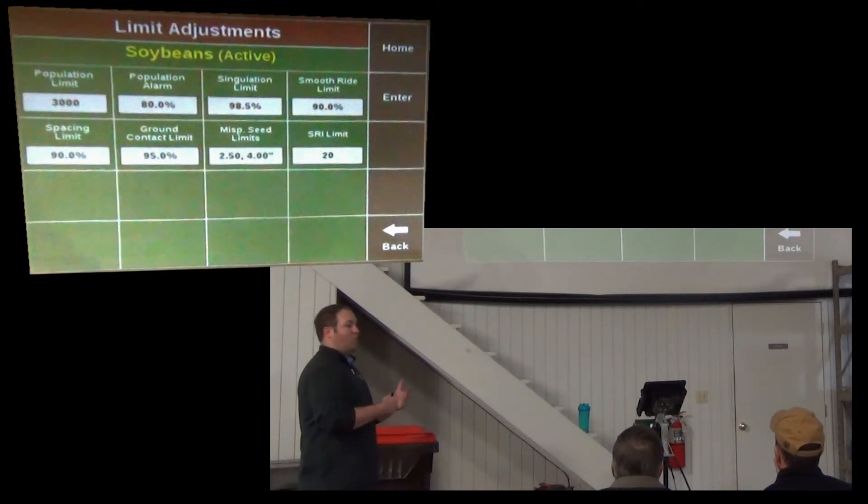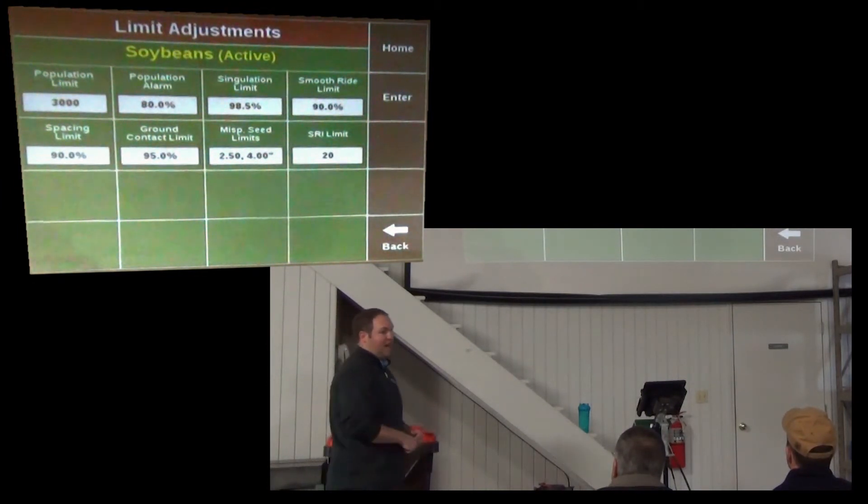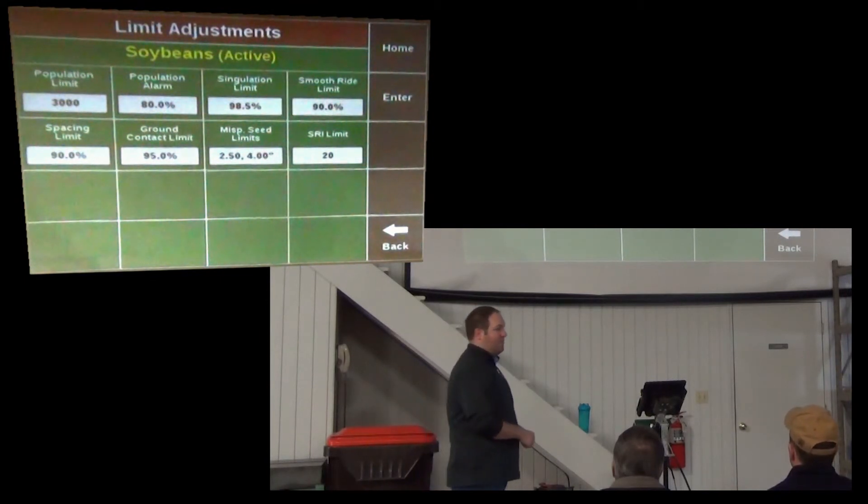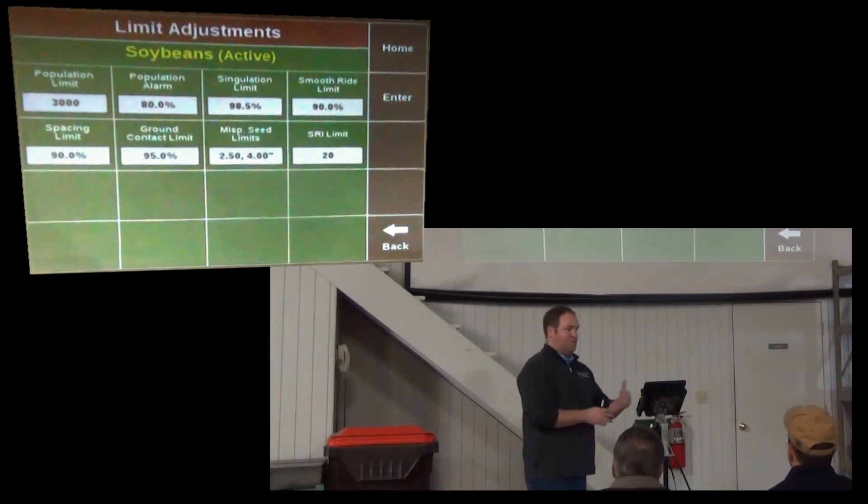singulation and spacing will not be accurate and potentially not be showing. So it depends on how many seeds per second are going by the sensors. Many times, with soybeans, there are so many seeds per second, we cannot accurately determine the singulation or spacing value. But your ground contact limit, smooth ride limit, leave that the same. Depth control is still just as important.